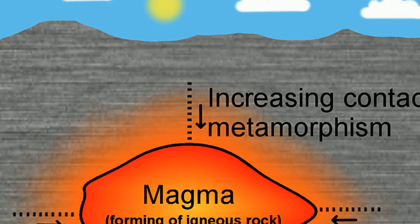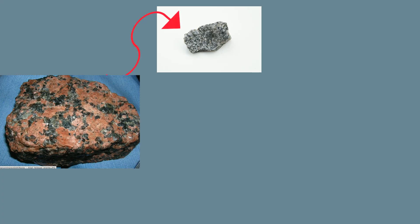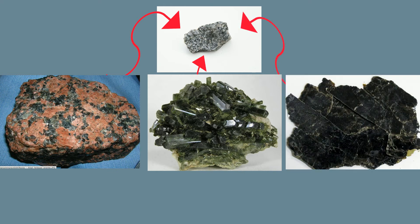It has a density between 2.8 and 3.0 grams per centimeters cubed. Diorite can be made up of the minerals feldspar, pyroxene, and biotite.